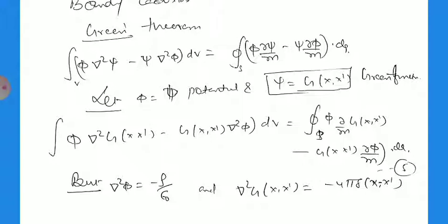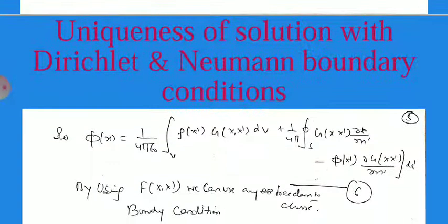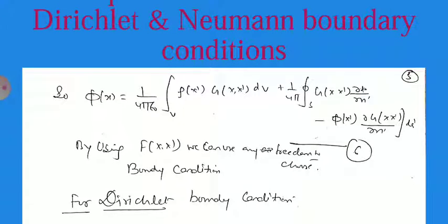Substituting del squared phi equals minus rho by epsilon naught and del squared G(x, x') equals minus 4 pi delta(x minus x'), we obtain the potential phi(x') as: 1 over 4 pi epsilon naught times the volume integral of rho(x) G(x, x') dV, plus 1 over 4 pi times the surface integral of G(x, x') del phi by del n' minus phi(x') del G by del n' dA.